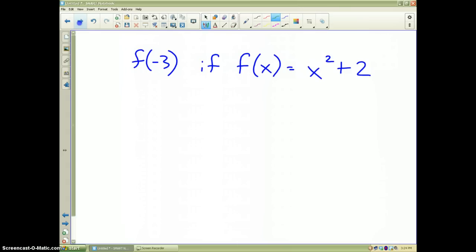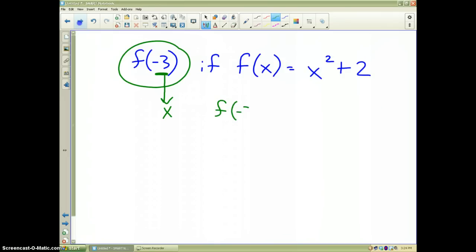Again, whatever is in the parentheses when you see this notation, that is the letter or the number for x. So, if I want to know f of negative 3, I'm going to put negative 3 right where the x is. And remember from an earlier lesson, we talked about substituting it in parentheses. So, negative 3 squared plus 2. We all know negative 3 squared is 9 plus 2 gives us an answer of 11, which is equal to f of negative 3.